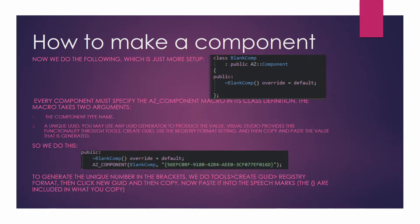Every component must specify the AZ_COMPONENT macro in its class definition. The macro takes two arguments: the component type name and a unique UUID — you must use a UUID generator to produce the value. Visual Studio provides this functionality through Tools > Create GUID. Use the registry format setting and copy-paste the generated value. So we do AZ_COMPONENT(BlankComp, "{paste-uuid-here}"). Go to Tools > Create GUID, select registry format, click New GUID, then copy and paste it into the speech marks — the brackets are included automatically.